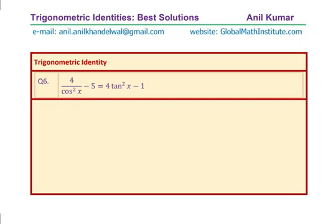Now, let us explore the best possible solution. We will prove this identity: 4 over cos square x minus 5 equals 4 tan square x minus 1. We are going to take help of the Pythagorean identity.